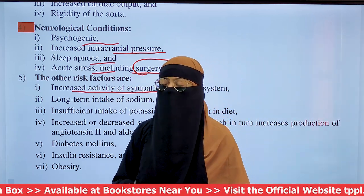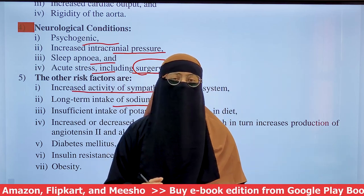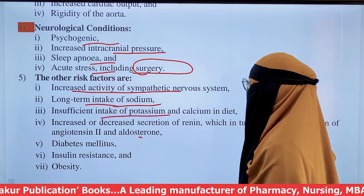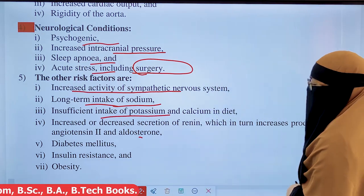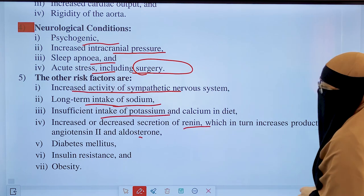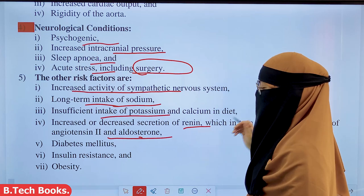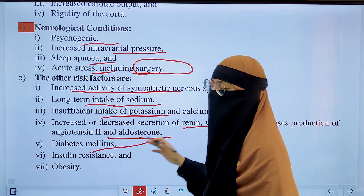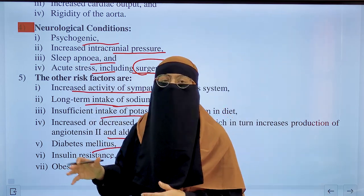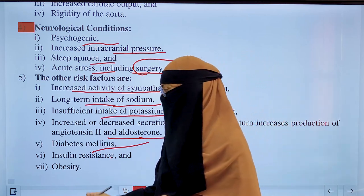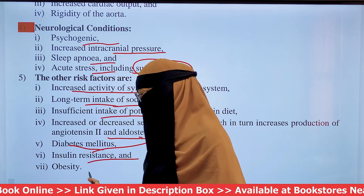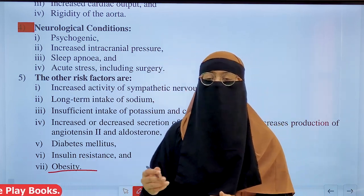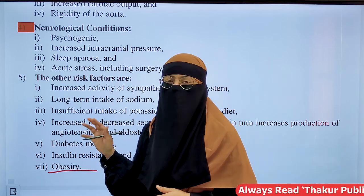Risk factors for hypertension include: increased activity of the sympathetic nervous system; long-term high sodium intake, as excess sodium causes blood pressure to increase; insufficient intake of potassium and calcium; increased or decreased secretion of renin, leading to elevated angiotensin 2 and aldosterone; diabetes and insulin resistance; and obesity, as many overweight patients develop hypertension.